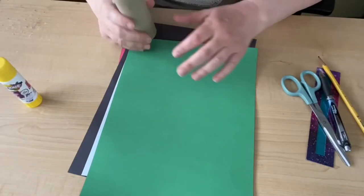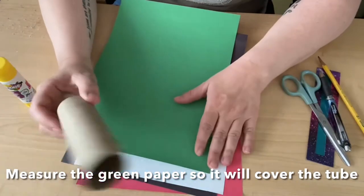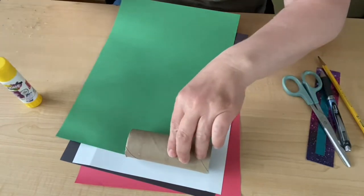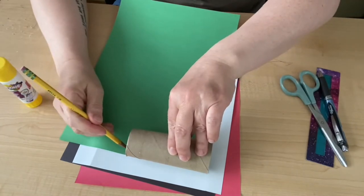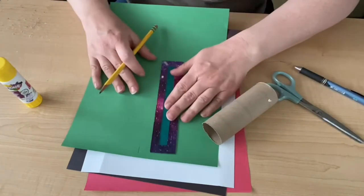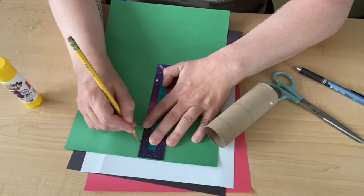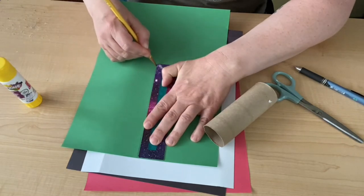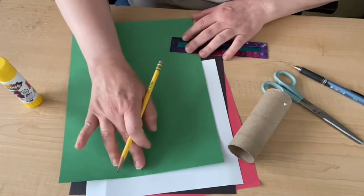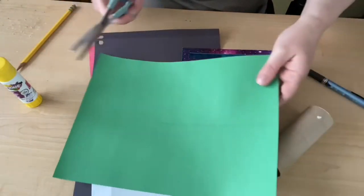The first step is to cover the toilet paper tube in green paper. I took the tube and held it to see how much paper it would take to cover it. I'm holding it like this, kind of doing a little measurement, and I'm going to mark it right here. Then I'm going to use my straight edge to measure so I can draw a straight line.